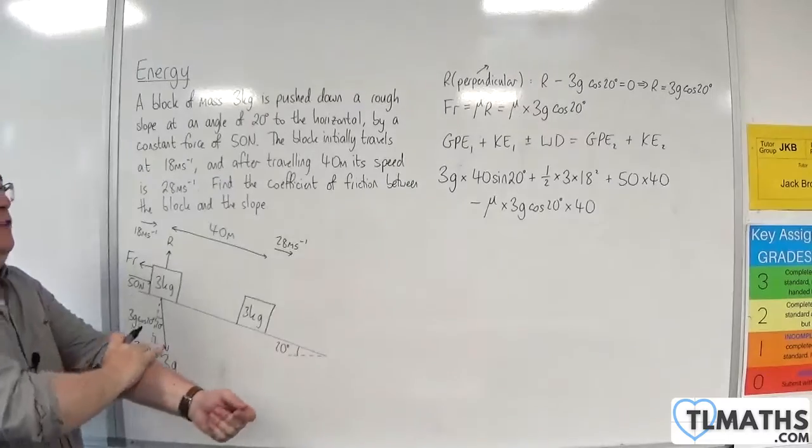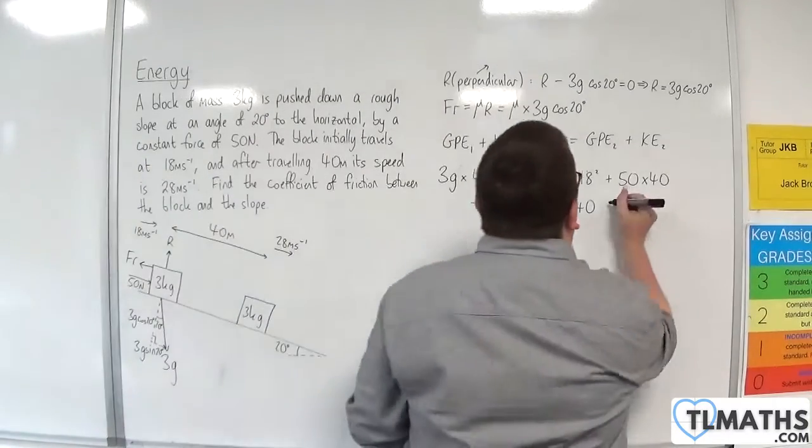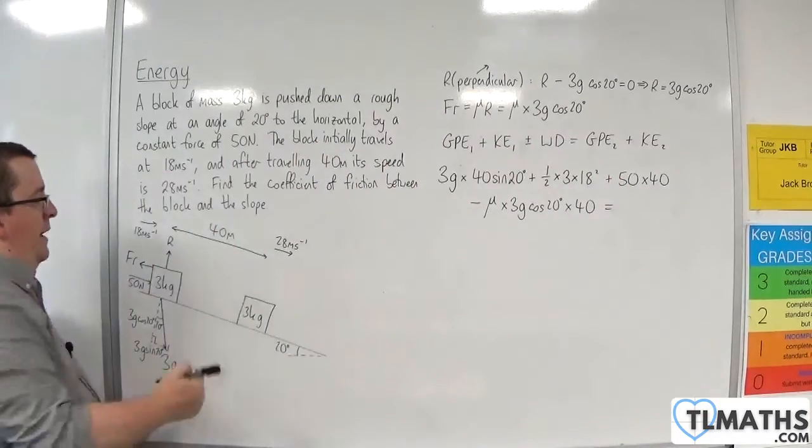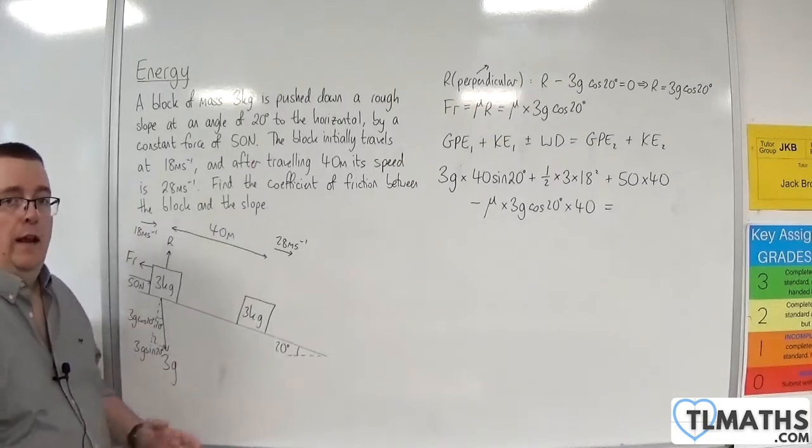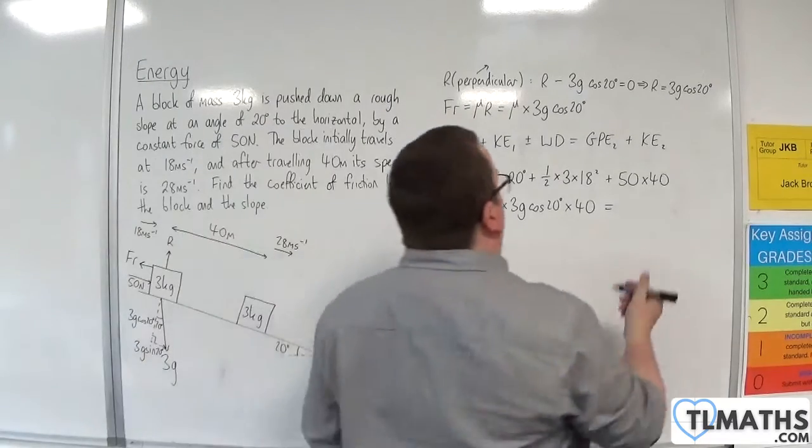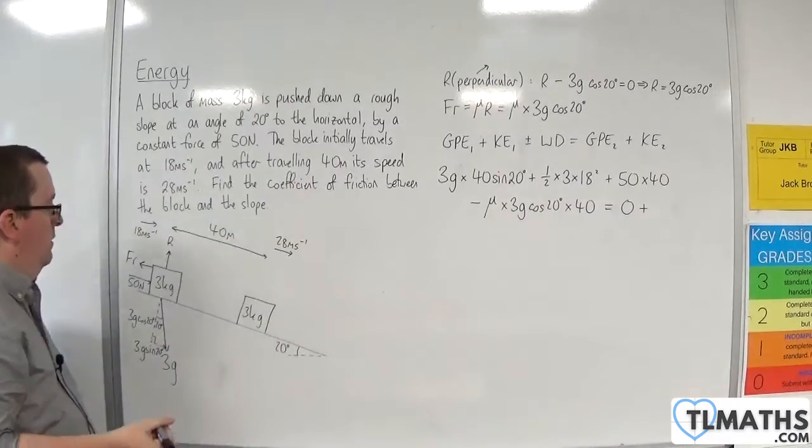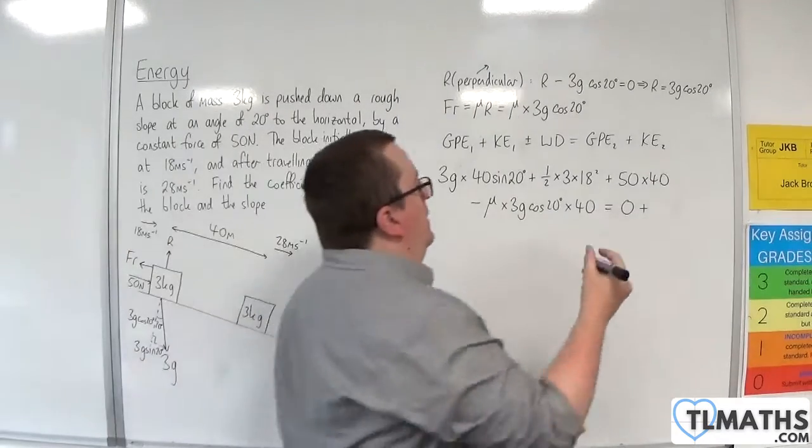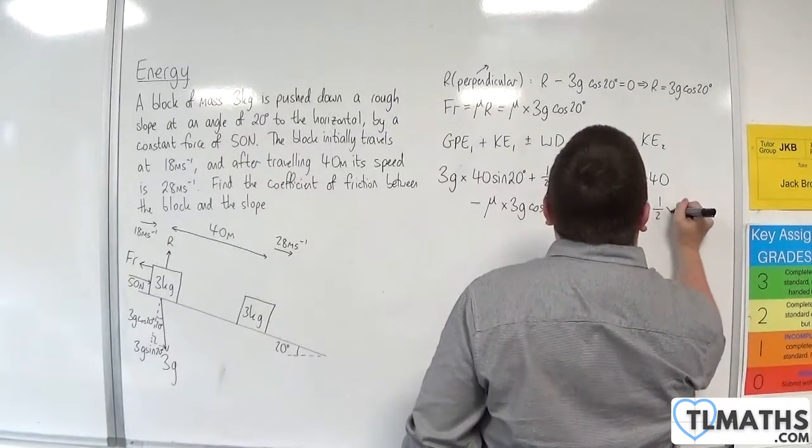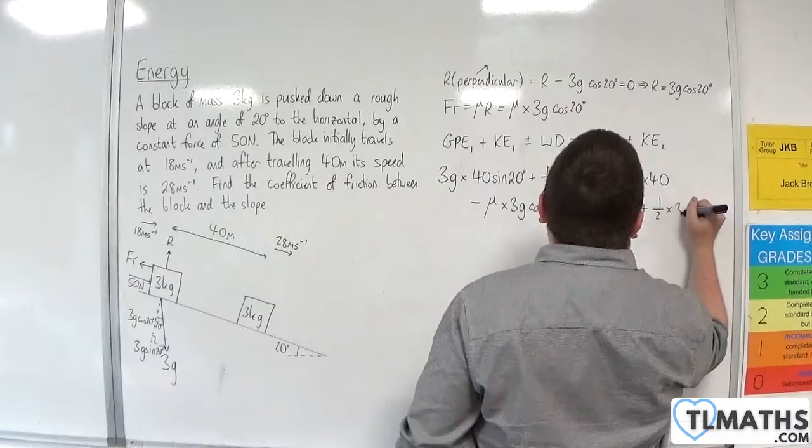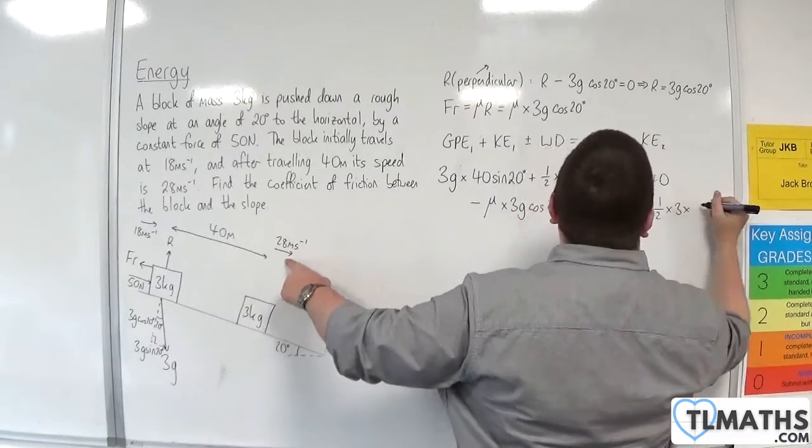Now, that's going to be equal to the final gravitational potential energy. Now, we'll take its final position as being 0 at ground level. And the final kinetic energy is going to be 1 half times M, which is 3, times V squared, so 28 squared.